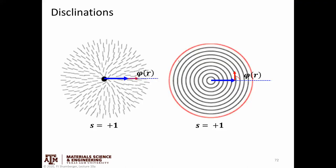Both of these are disclinations with a strength of plus one, but they're obviously quite different. The main difference is the orientation of that disclination at the starting point. In the first case, the angle between the director and the reference direction is zero; in the second case, it's pi over two. We can introduce another constant C that tells us what the starting orientation of the director is with respect to some reference position — though for this to make sense, you have to define what that reference direction is.